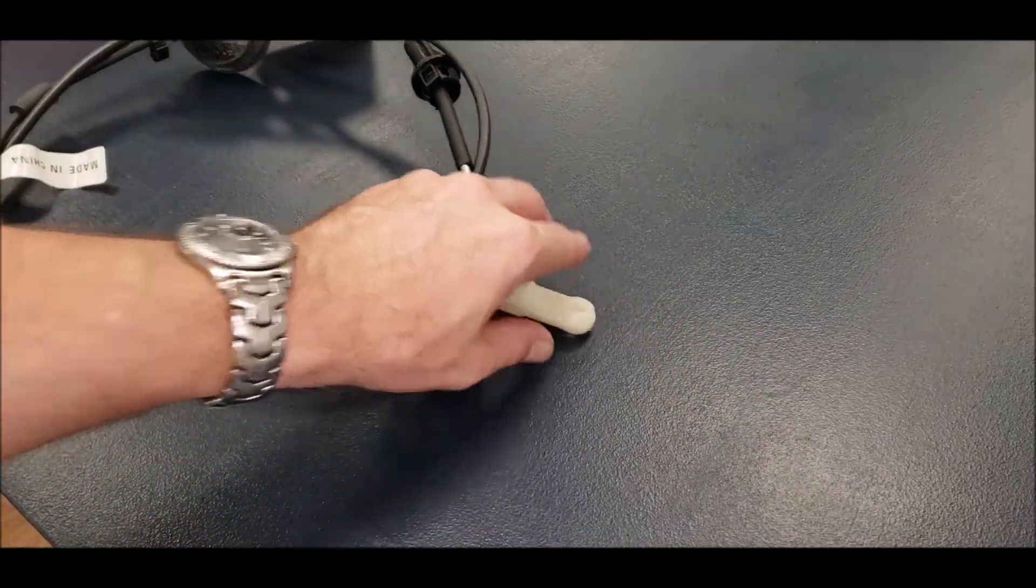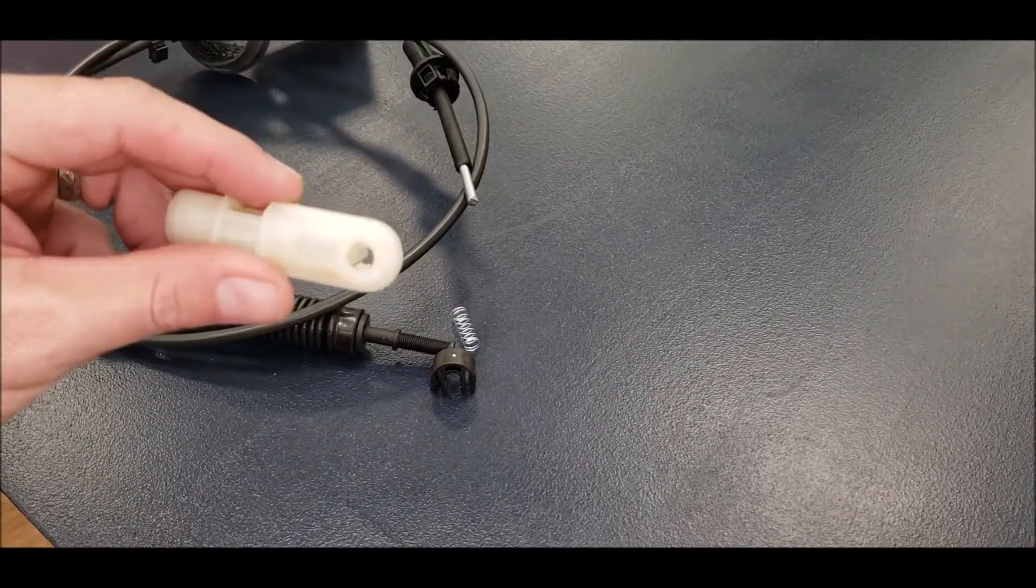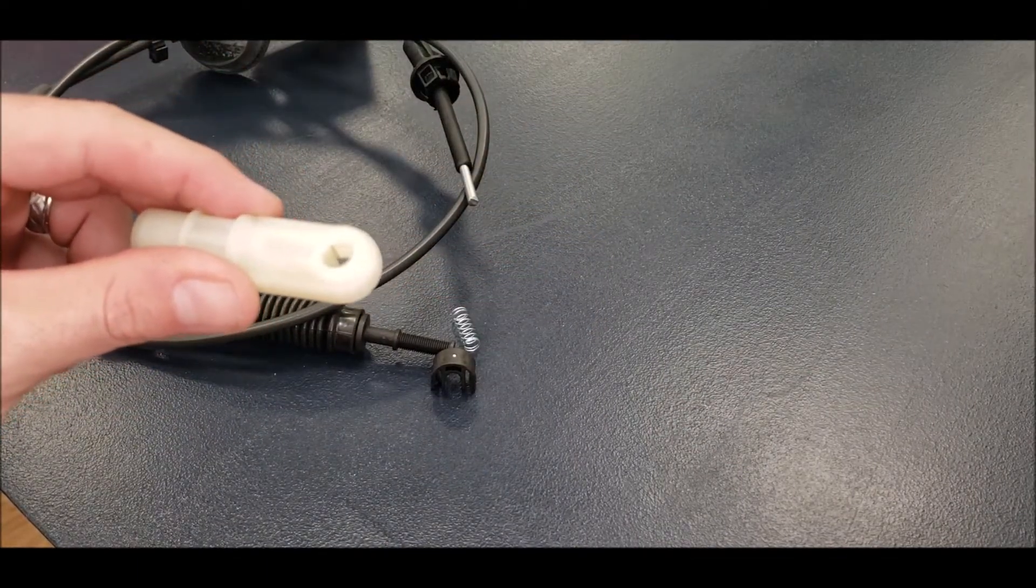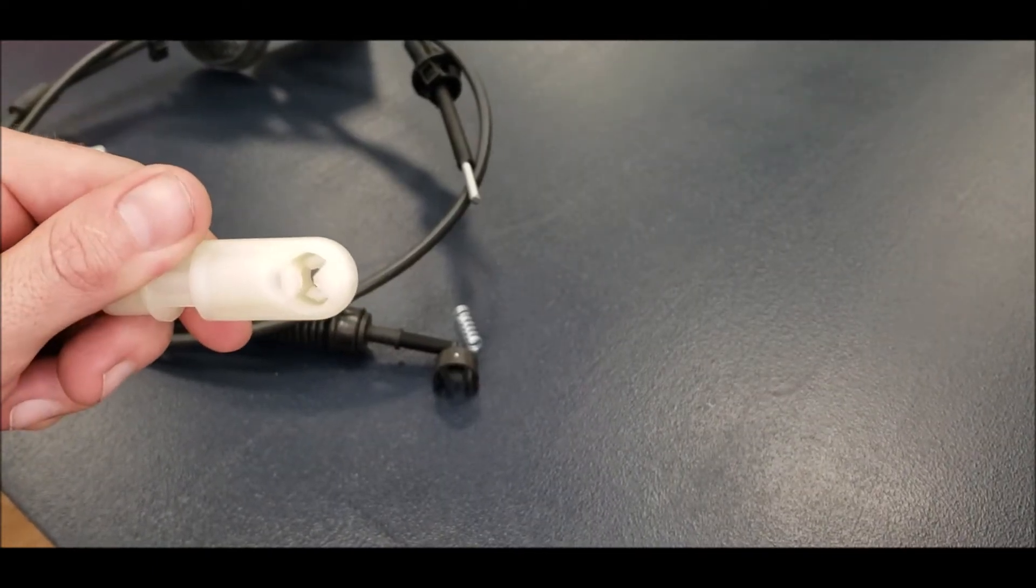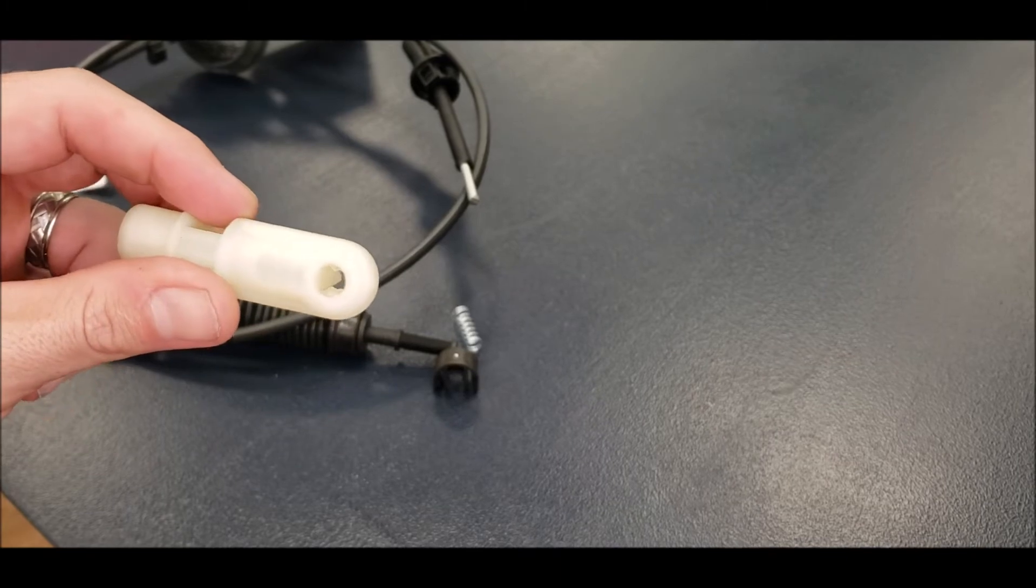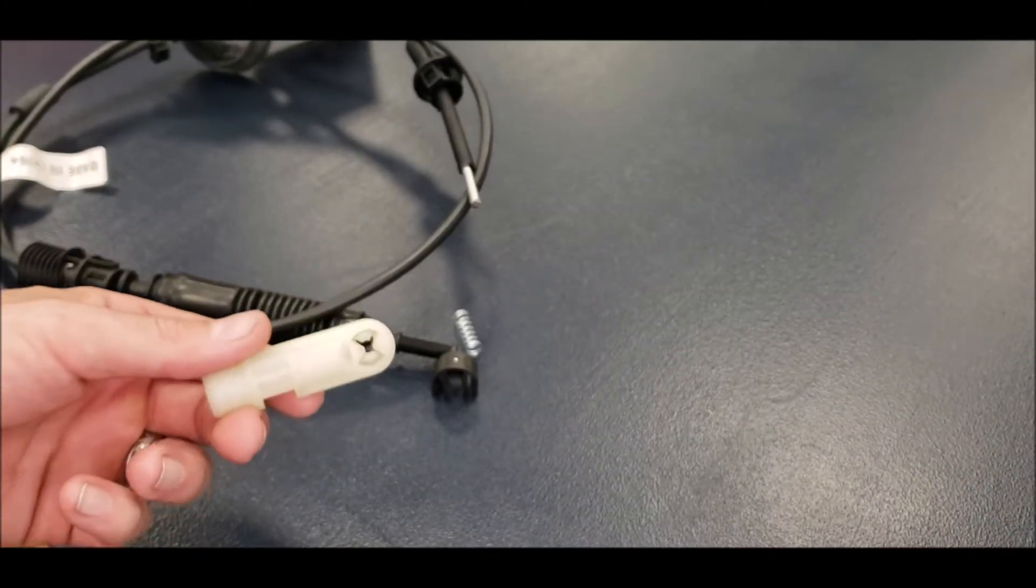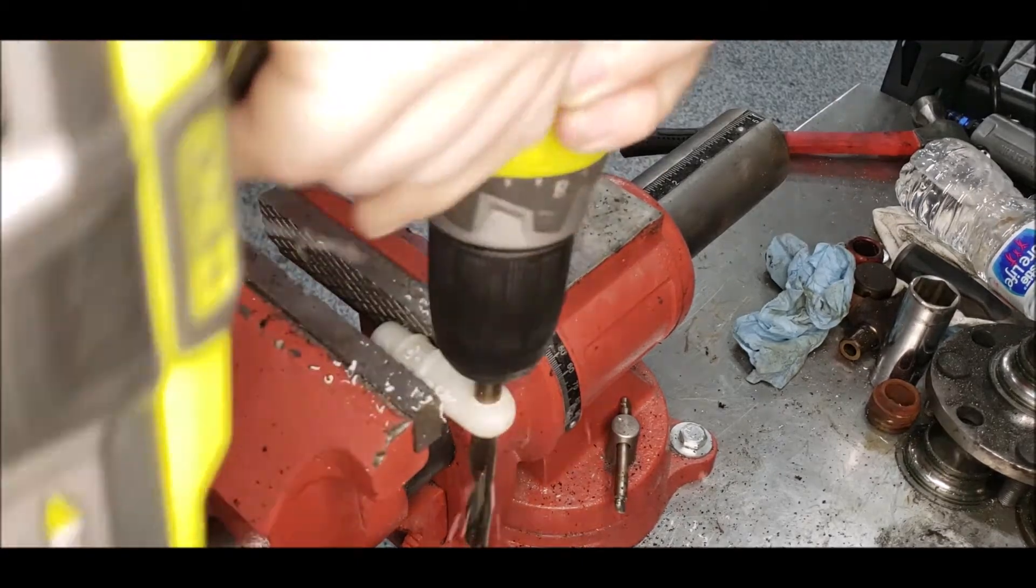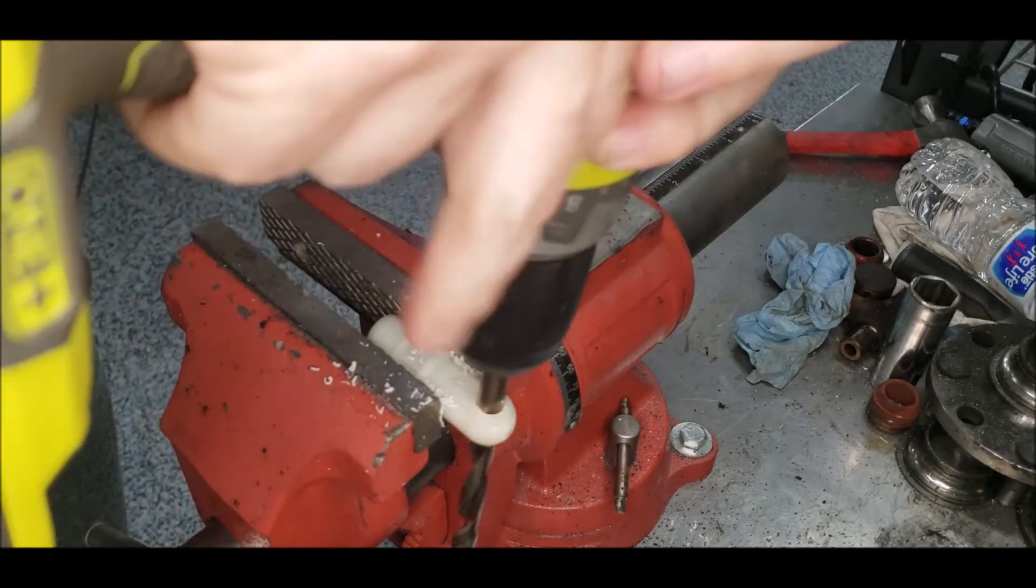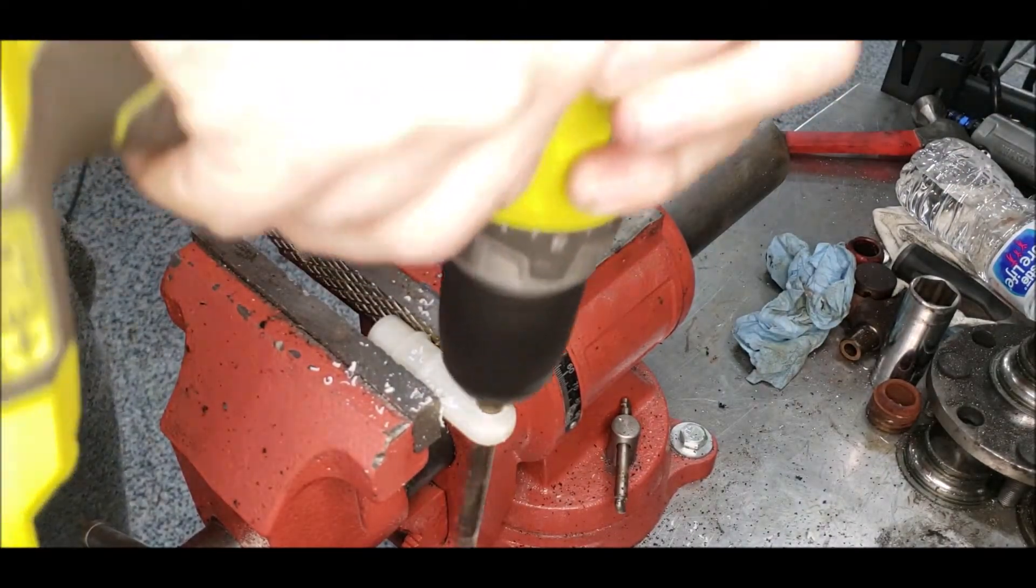You'll need to use a 3/8 drill bit to drill out the end of this cable end, and you'll want to drill through the side that is already circular. I recommend using a vise to do this. If you don't have a vise, you can use something else to hold the cable end—not your hand, but something. And if you're going to do that, I recommend starting with a smaller size drill bit and working your way up slowly to 3/8.